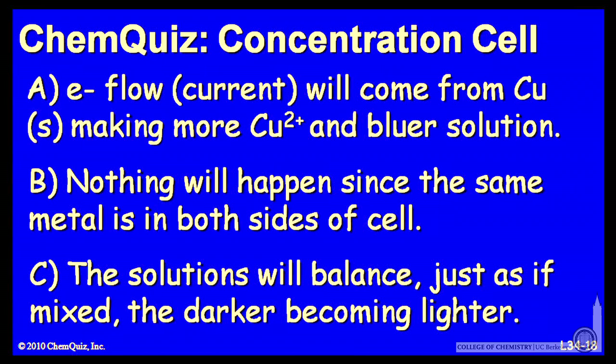Let's look at a possible explanation for each answer. A: electron flow, or current, will come from the copper metal, making more copper ions and a bluer solution. B: nothing will happen since the same metal is in both sides of the cell. Or C: the solutions will balance just as if they were mixed, the darker becoming lighter. Think about those three and make a selection.